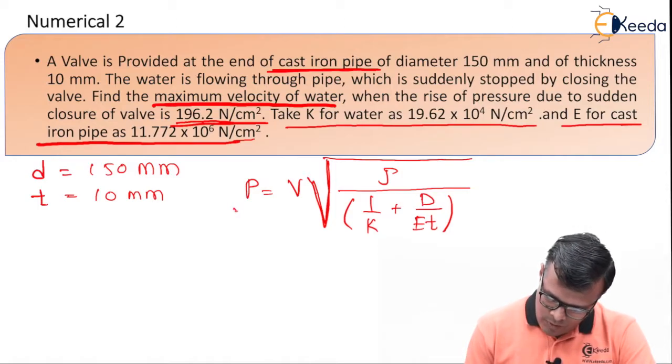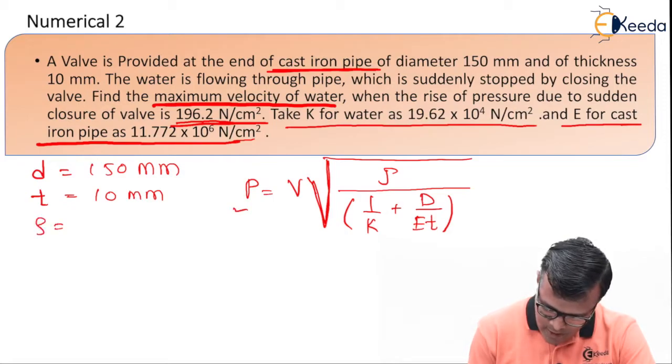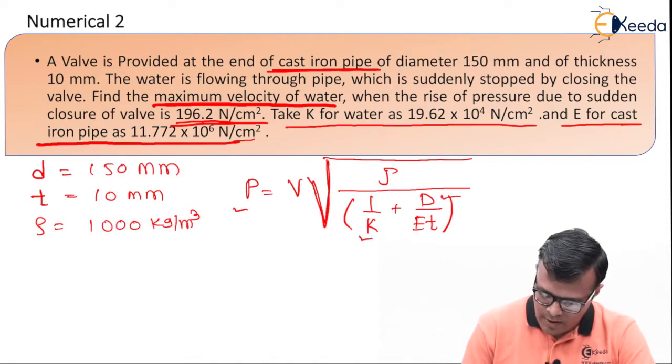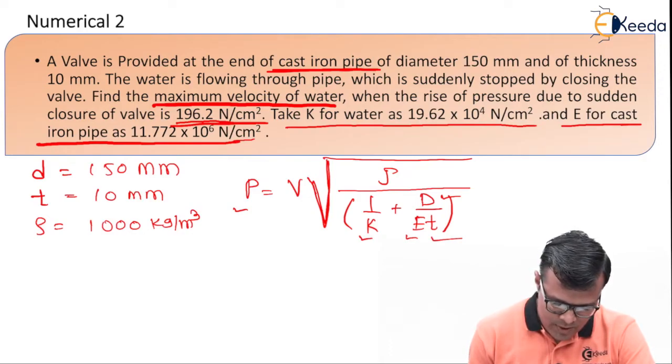So P is given to us. We will have to calculate ρ. ρ is, we all know for water, it is 1000 kg per meter cube. K value is given to us, E is given to us, T is also given to us.